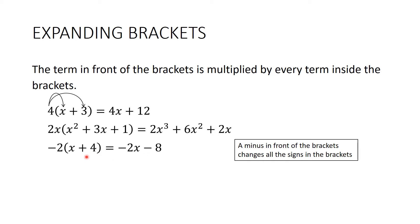What about −(x − 5)? There's a 1 here — remember we don't often write the ones. So this is minus 1 times x, which is −x, and minus 1 times minus 5 is positive 5. So the minus goes through the brackets and changes all the signs inside.